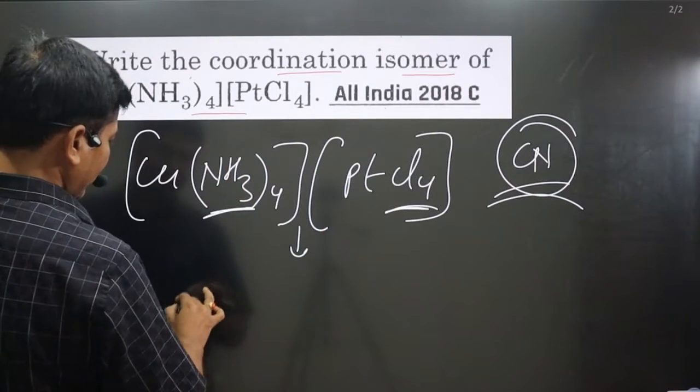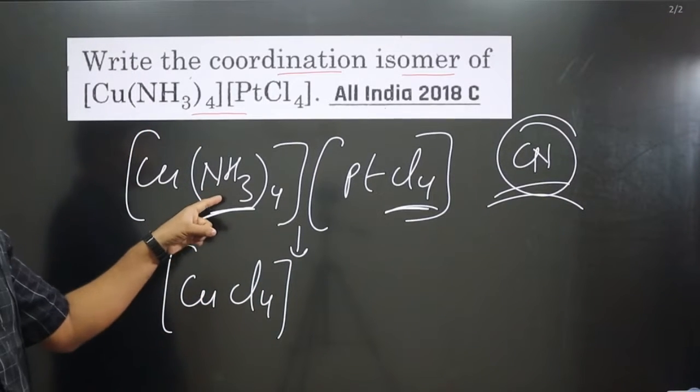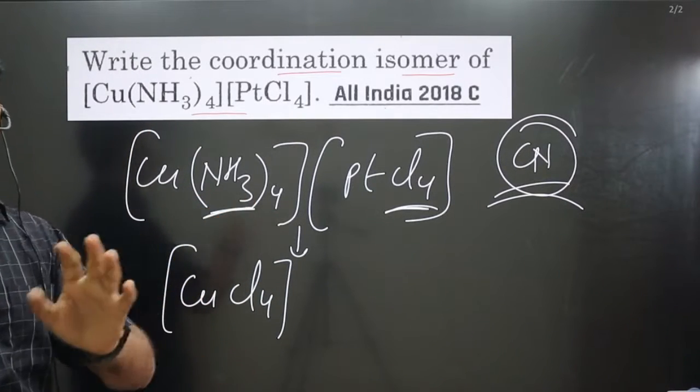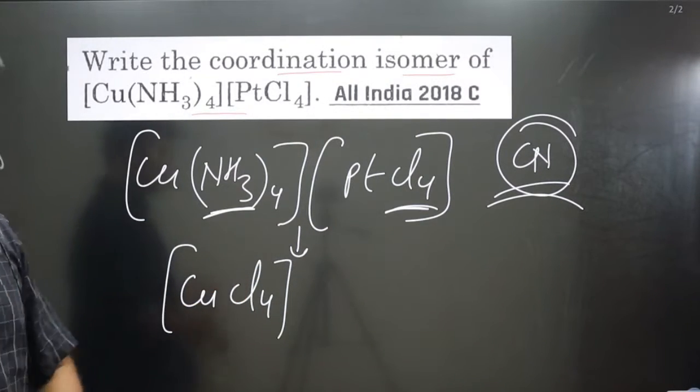So as a result we get this is Cu and it is Cl4. You can see coordination number. In this case also what is the coordination number? Four. Number of ligands attached to the central metal atom. In this case also coordination number is same.